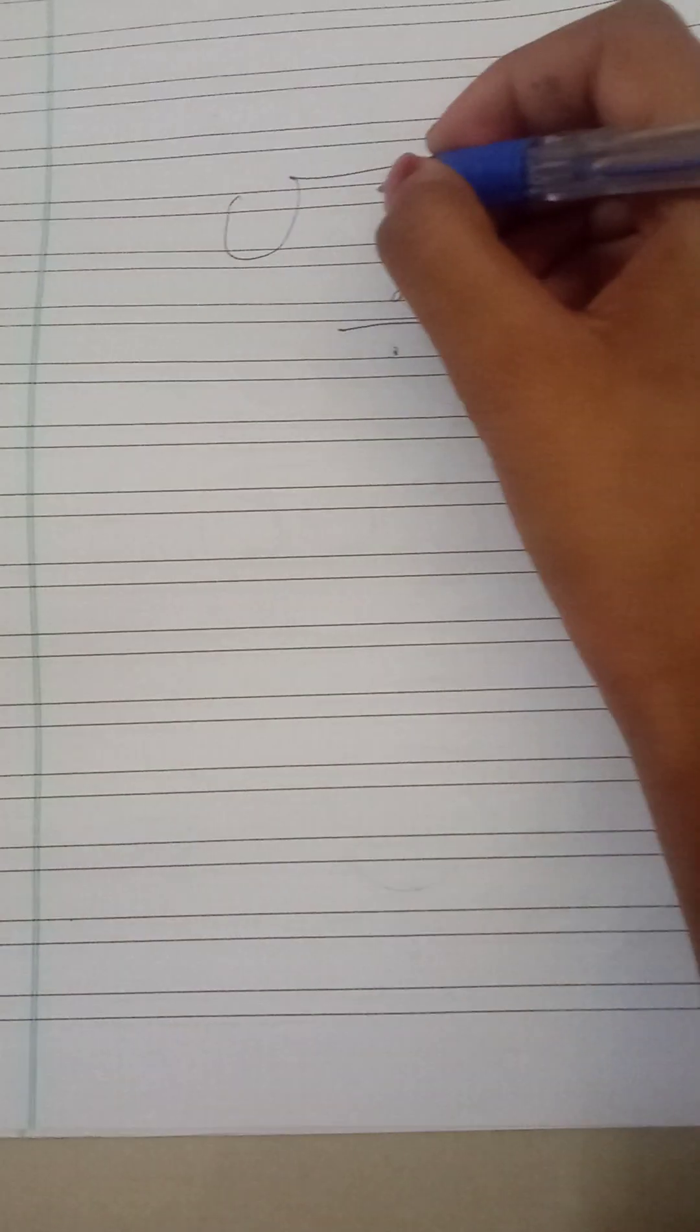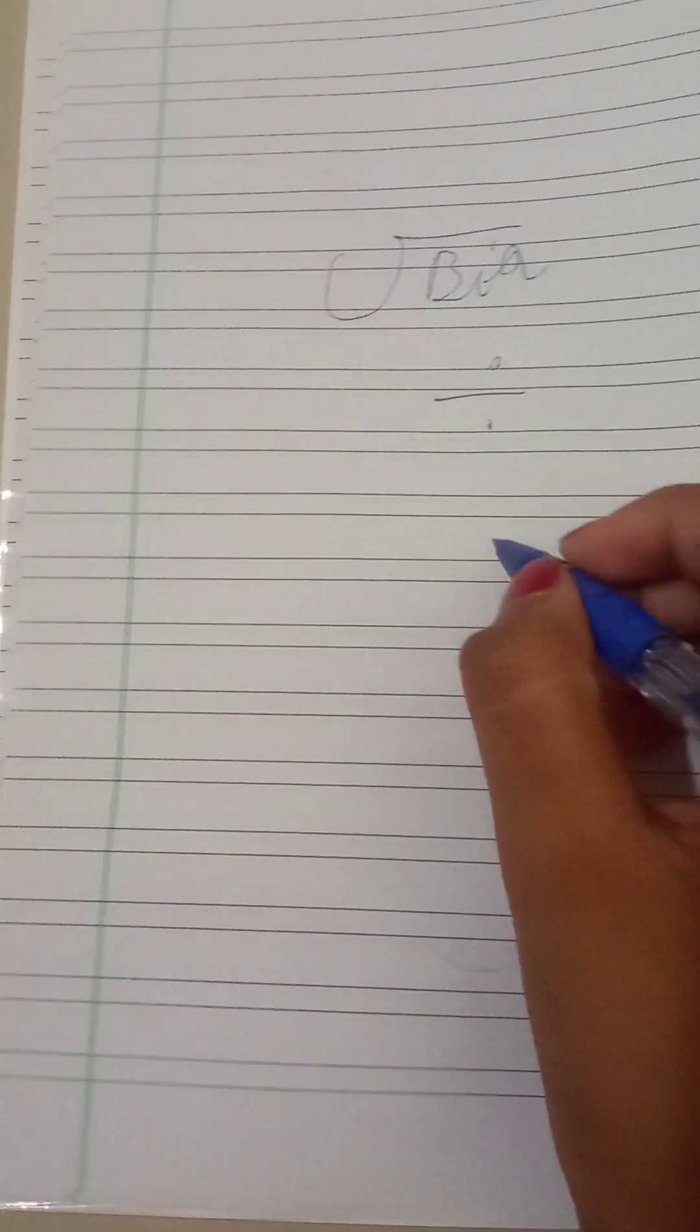Now, let's begin with the concept. Division signs are like this. This one is used for big divisions and this one is used for small divisions.